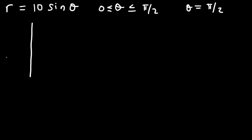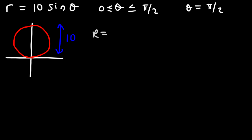First, let's draw the polar graph. Sine theta is basically a circle along the y-axis. Now r is 10, which means the diameter of the circle is 10 units long, and therefore the radius of the circle is half of the diameter, which is 5. This particular circle is bounded by theta equals 0 to pi over 2, so we only have the right side of the graph. However, when we rotate it about the line theta equals pi over 2, we're going to get a sphere about that same line, and so we need to find the surface area of the sphere.